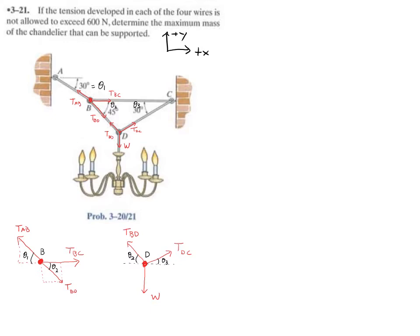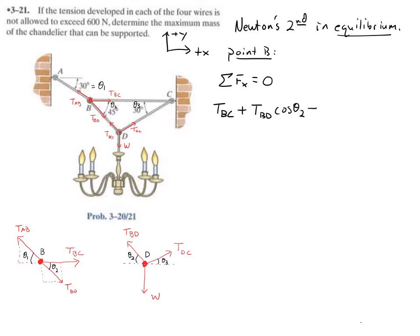Okay, so now the point of drawing these diagrams is they help me determine the equations that go with Newton's second law. So I'm going to use now Newton's second law in equilibrium. So let's look at point B. We have the sum of the forces in the x direction equals to zero, right? Equilibrium means there's no acceleration. So at point B, let's look at my coordinate system and write down the forces in the x direction. So I've got TBC, that's in the positive x direction. I've got plus TBD cosine theta 2. And then I've got minus TAB cosine theta 1 equals to zero.